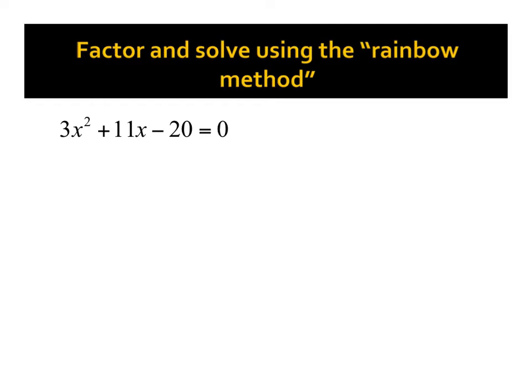Okay, well with the rainbow method, what we're going to do is this. We're going to set it up a similar way with the x. Alright, we want to add up to 11, but instead of multiplying to this negative 20 here,